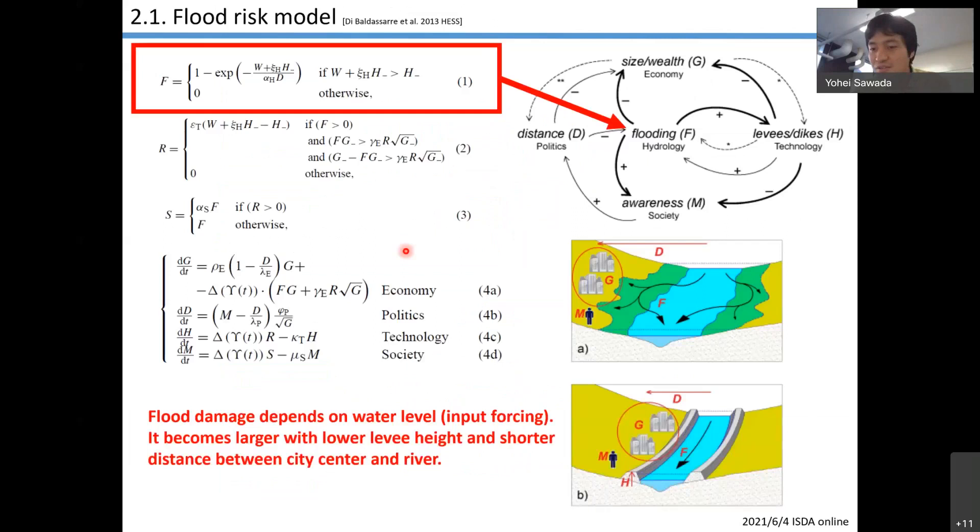My socio-hydrological model is a flood risk model. This is one of the most famous models in our community. This model deals with the interaction between flood and city dynamics. The first equation shows damage. Flood damage depends on water level, but water level is recognized as input forcing in this model. Water level is not explicitly solved by hydrological model or any other river models. It becomes larger with lower levee height and shorter distance between city center and river. So if the city is located near the flood plain, the damage gets increased.